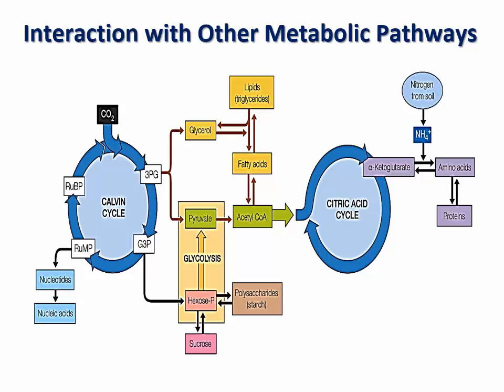The overall photosynthetic reaction therefore becomes this. Plants synthesize all their molecules from three simple starting materials: carbon dioxide, water, and ammonium. Intermediate metabolites of the Calvin cycle are used as starting points for other pathways, some of which link photosynthesis to aerobic respiration.